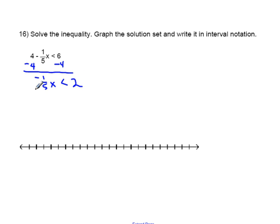Now we need to get rid of the negative one-fifth. We can do that by multiplying both sides by negative 5. Remember when you multiply or divide by a negative with inequalities you flip the direction of the sign. So bring down the x, flip the direction of the inequality to greater than, and 2 times negative 5 is negative 10.